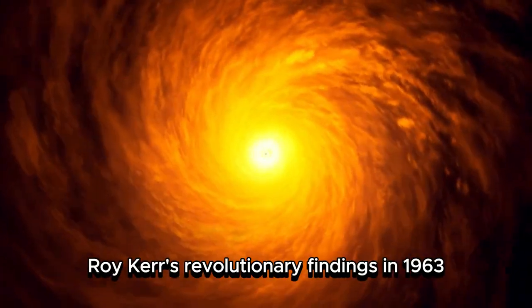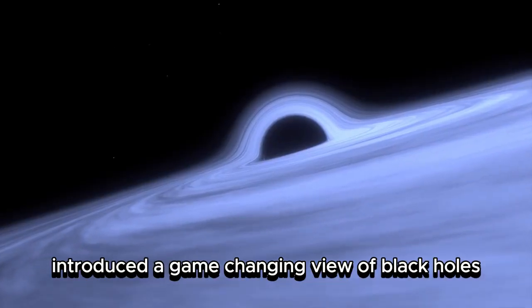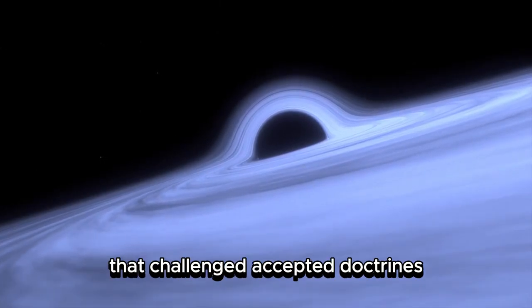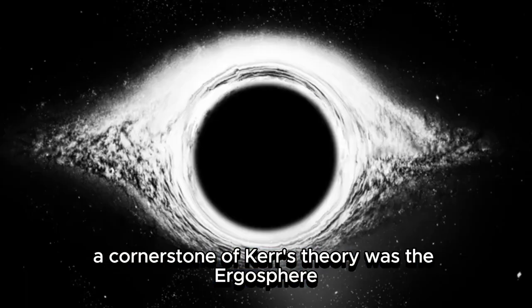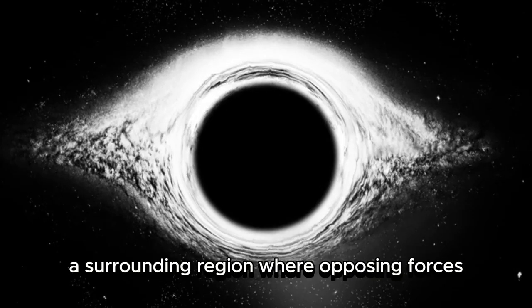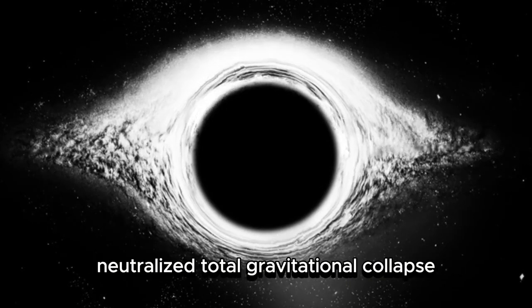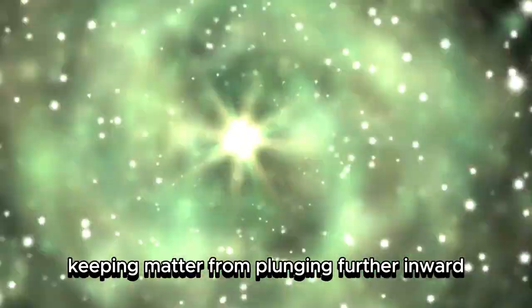Roy Kerr's revolutionary findings in 1963 introduced a game-changing view of black holes by proposing a model of rotating black holes that challenged accepted doctrines. A cornerstone of Kerr's theory was the ergosphere, a surrounding region where opposing forces neutralized total gravitational collapse, keeping matter from plunging further inward.